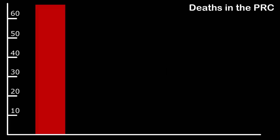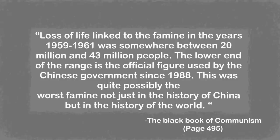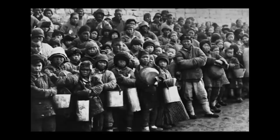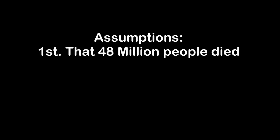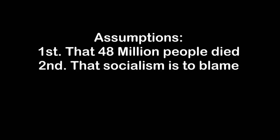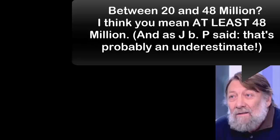65 million supposedly died in China. But just like the Soviet Union figure, this includes political prisoners and ethnic purges, which I don't consider victims of an economic system. About the Chinese Famine, Courtois writes that loss of life linked to the famine of 1959 to 1961 was somewhere between 20 million and 43 million people — the lower end being the official figure used by the Chinese government since 1988, making it possibly the worst famine in history. The book assumes two things: that the high end of the death toll is correct, and that this famine was the result of socialist theory put into practice. The official death toll is actually 15 million, which is 5 million less than what the book claims the official number is. The highest scholarly estimates go up to 30 million — still 13 million short of what Courtois claims.